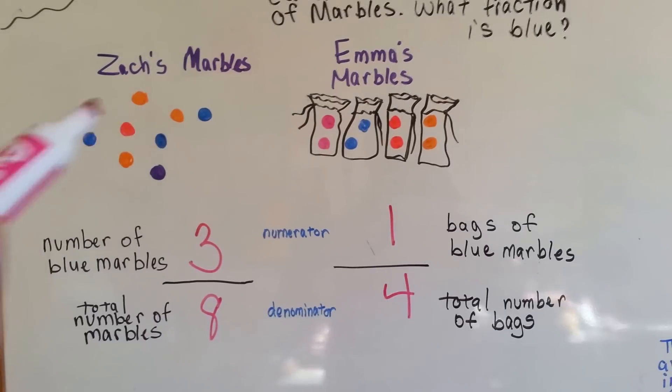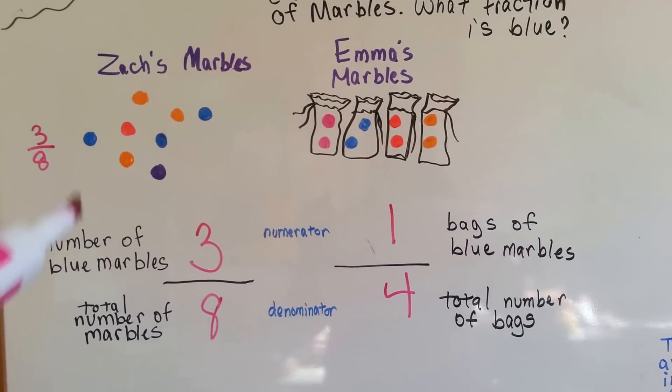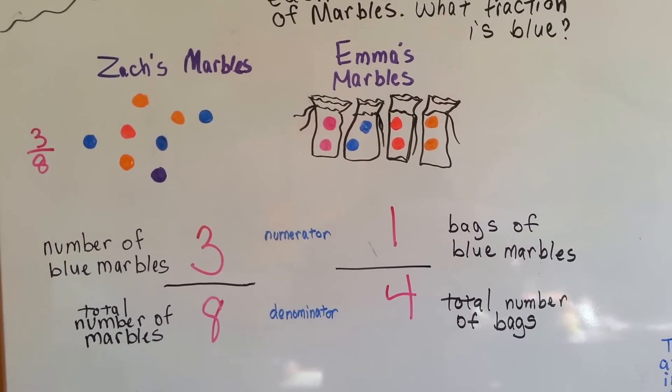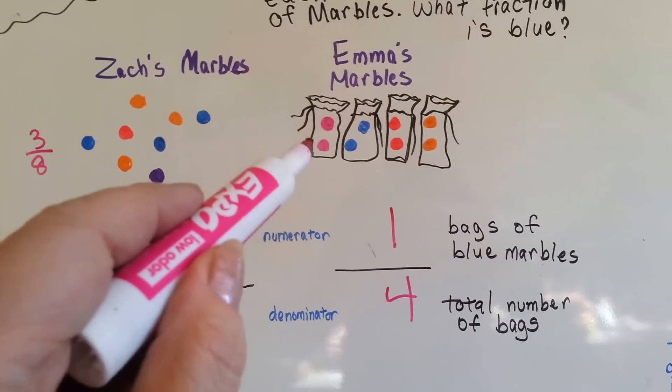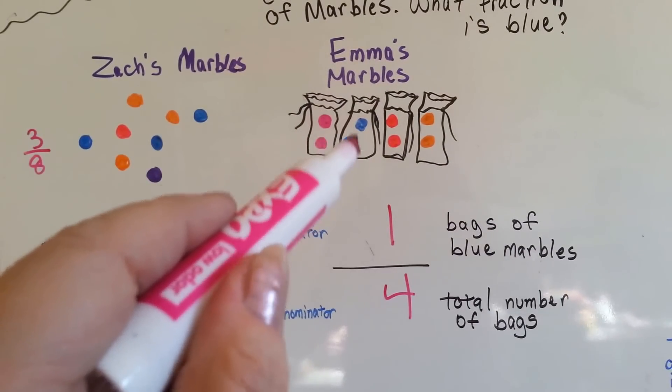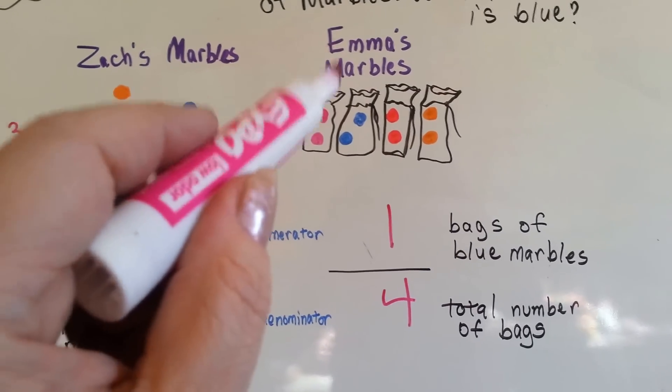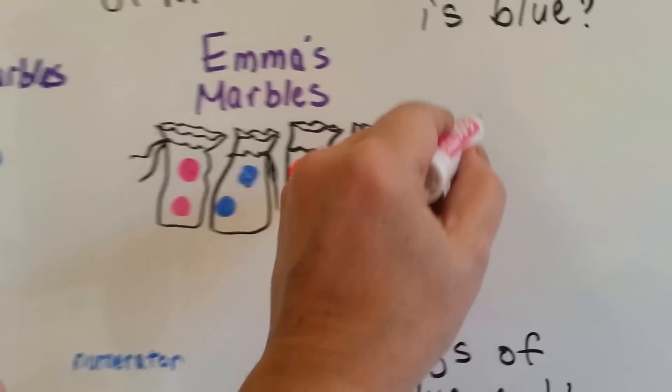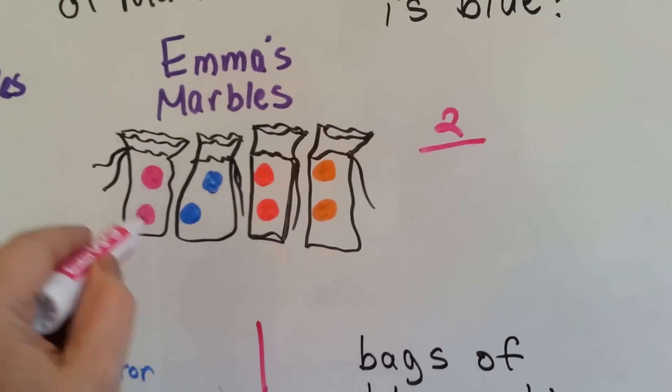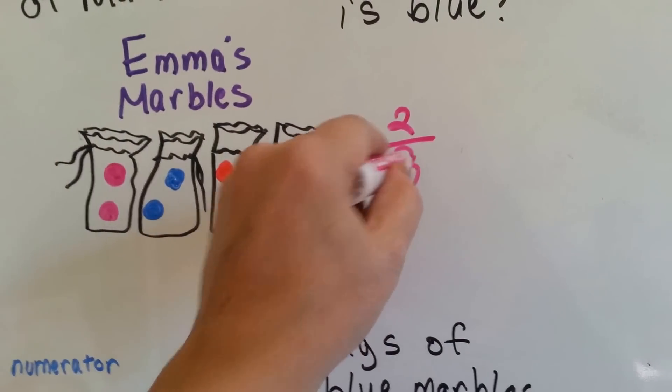These are all separate, so we just counted the actual blue marbles. If we wanted to count the actual blue marbles for Emma, she would have two eighths, because she would have these two blue marbles, and there's a total of eight. See that?